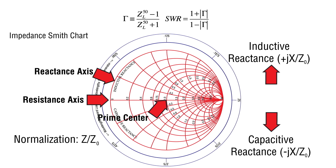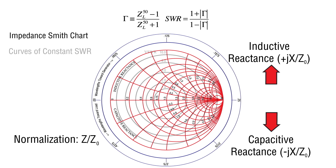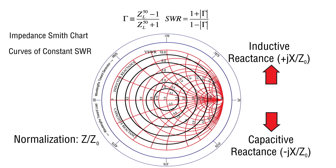One last thing we need to know is what happens if we connect a length of lossless transmission line to a load. Since the standing wave ratio is constant with a lossless transmission line, this is represented by a series of circles positioned on the center of the Smith chart. Larger diameters mean higher standing wave ratio. Traversing 360 degrees around a constant standing wave ratio circle corresponds to a transmission line of one-half wavelength.